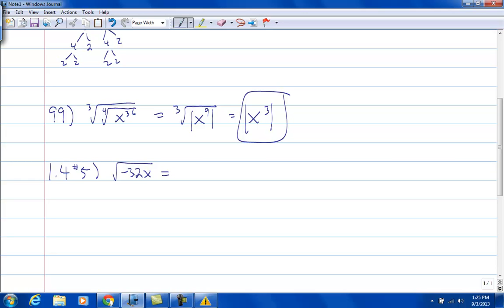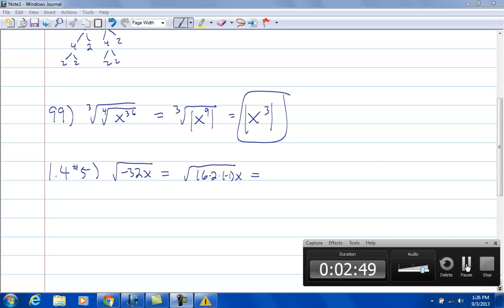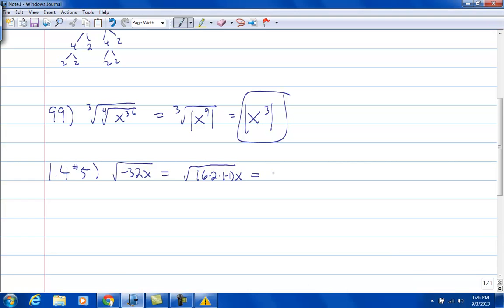Think of 32, what's a perfect square factor of 32? Well, 16, so it would be like 16 times 2 times negative 1 times x. The square root of 16 is 4, the square root of negative 1 is i, and then we have left under the radical, 2x.